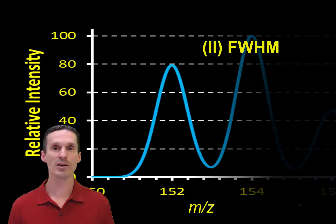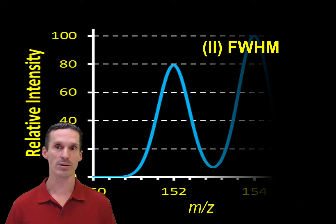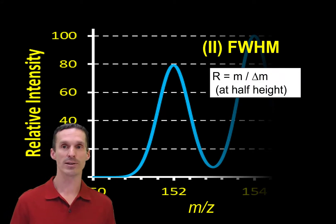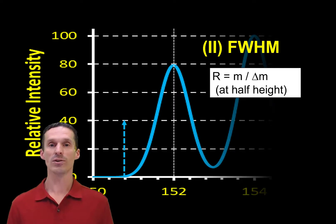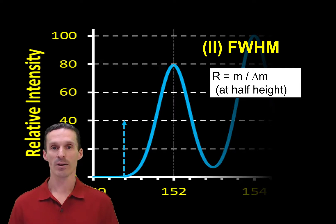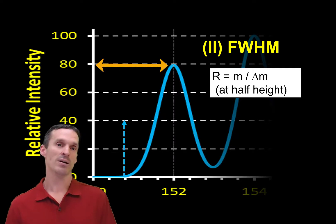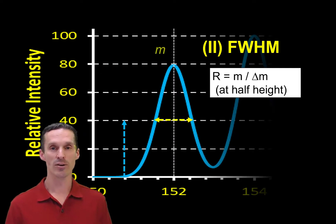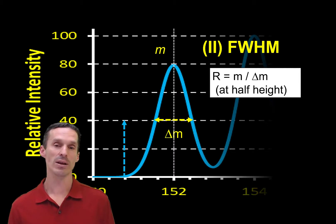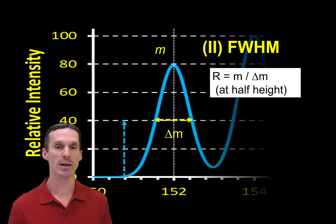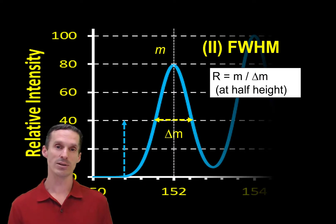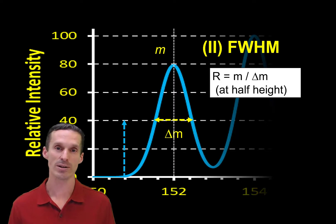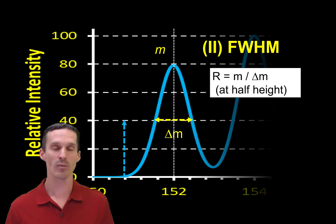Instead, this is the one that most people use when reporting resolution: it's called the full width at half maximum. The resolution is simply the mass divided by the peak width at half max. You look at your mass — this one's 152 — find the peak height, divide that number by two. The height is 80, so halfway down is 40. You cross that peak at that point to get the peak width. The sharper the peak, the narrower that width, and dividing by a smaller number makes the resolution go up. This is a simpler version because it only relies on looking at one single peak.